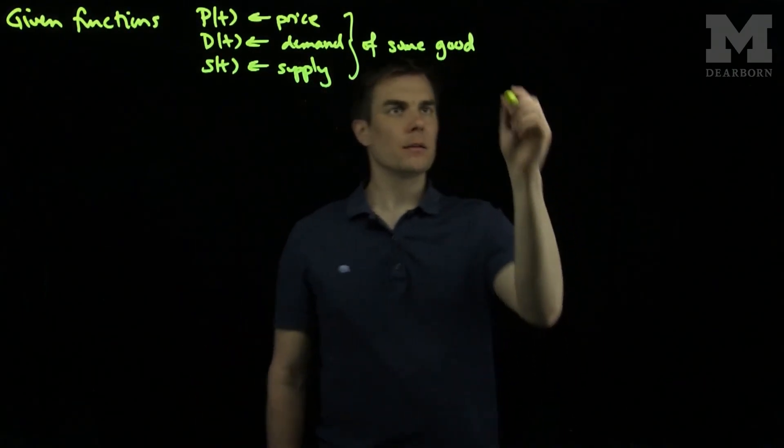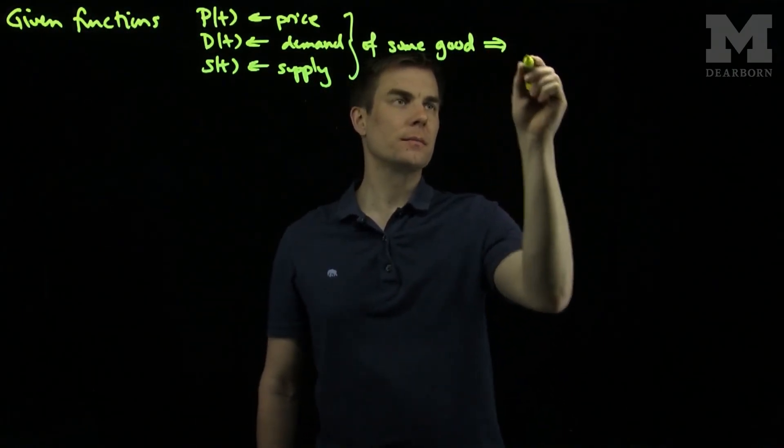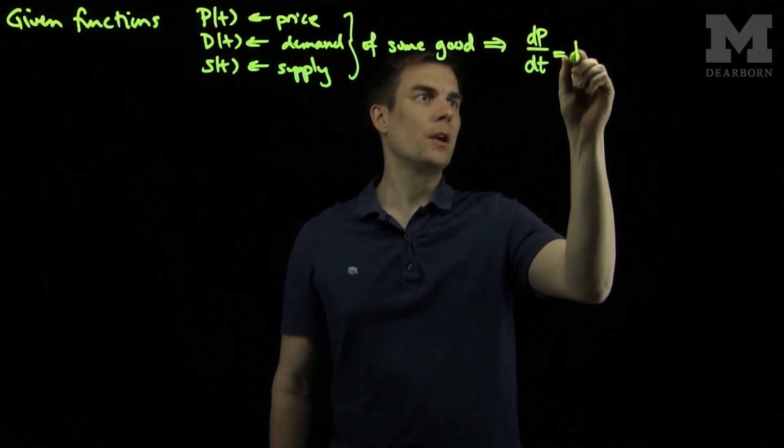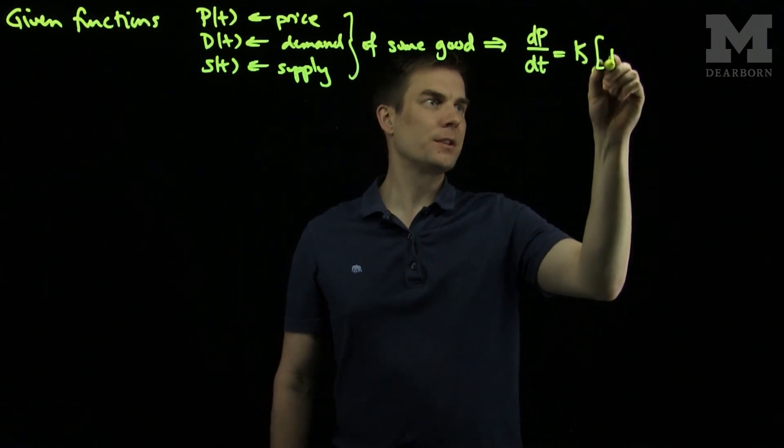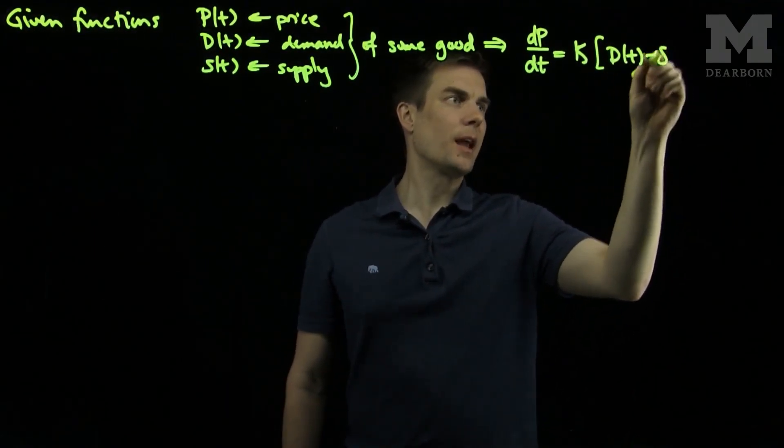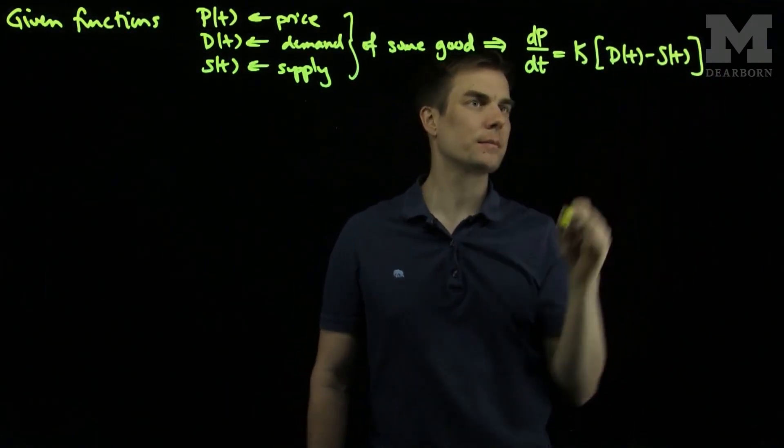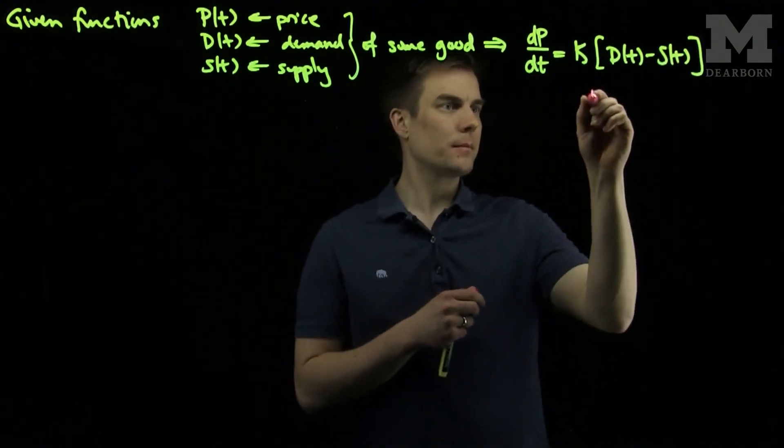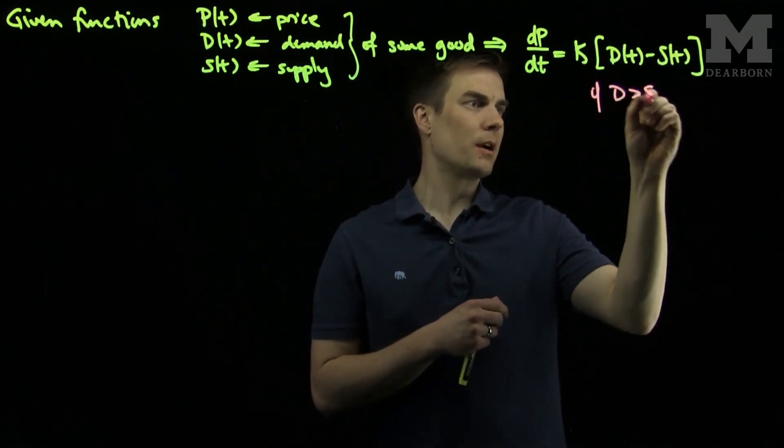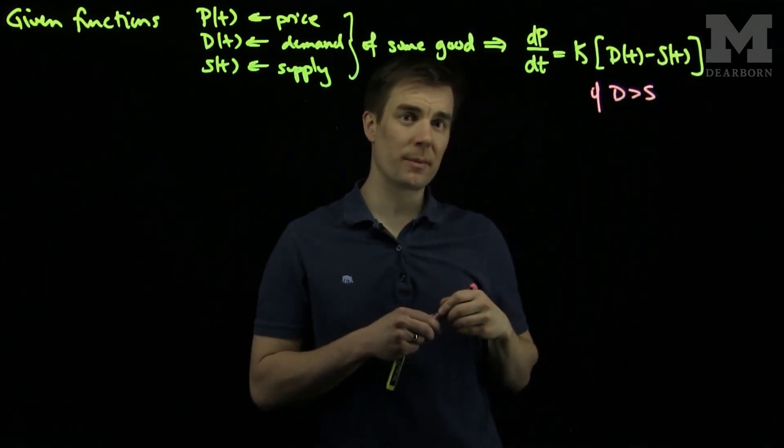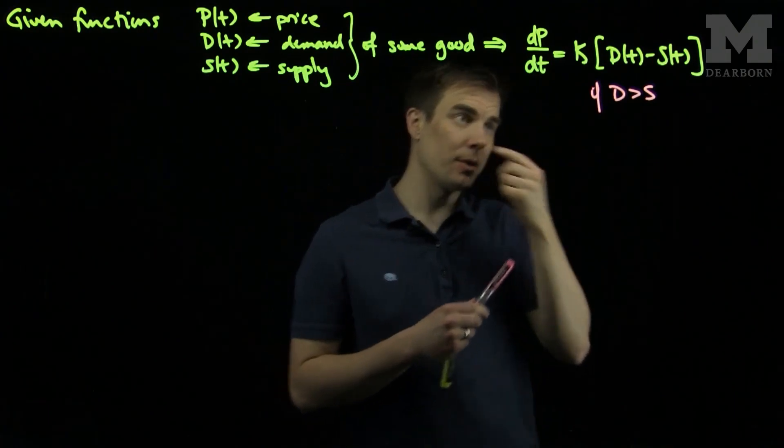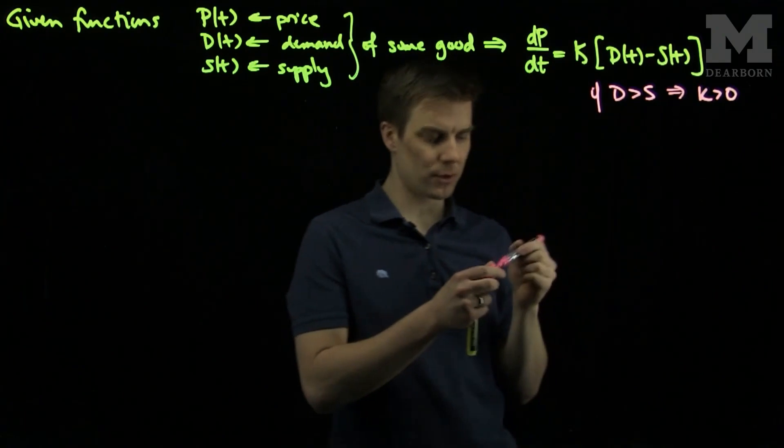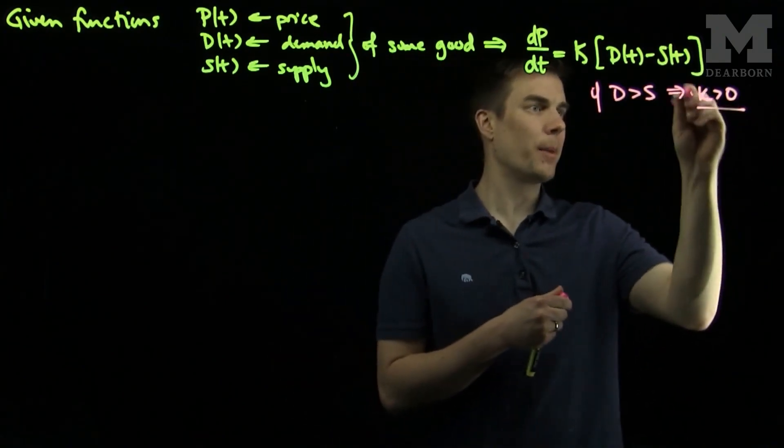A model for the change in the price will be dP/dt, the change in the price with time, is proportional to the difference in demand and supply. And so we should make a note about this. If the demand is bigger than the supply, the price should go up. So that will tell us that K should be positive. So our parameter K here will be a positive parameter.